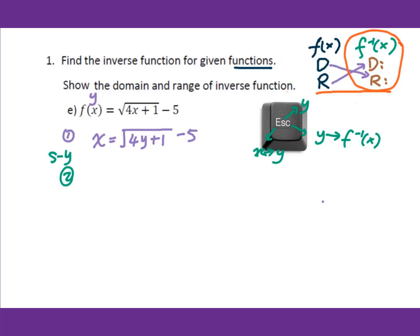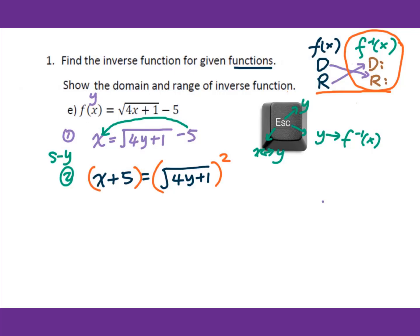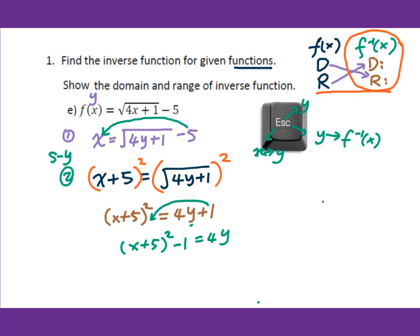The second step is to solve for y. This is a square root equation, so isolate the radical by adding 5 to both sides: x plus 5 equals square root of (4y plus 1). Then square both sides: (x plus 5) squared equals 4y plus 1. Solve for y — this is a linear pattern — subtract 1 and divide by 4: y equals ((x plus 5) squared minus 1) over 4.